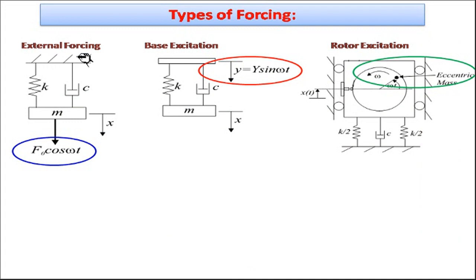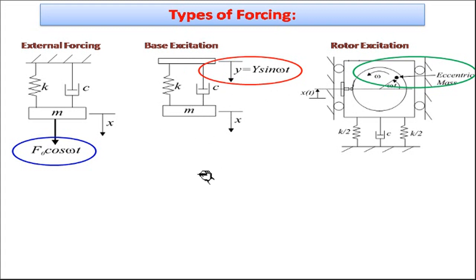Examples of forced vibration include an external forcing function f₀·cos(ωt), which is a periodic force causing motion of the system. There is also base excitation — when a vehicle moves on a road or an aircraft lands, the landing gear experiences base excitation forces. Rotor excitation occurs in centrifugal pumps and compressors, producing excitation forces that cause the system to vibrate under forced vibration.